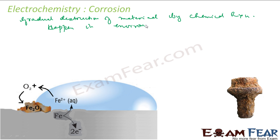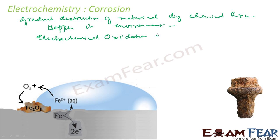This does not happen only in labs — it happens in the environment. It is electrochemical oxidation of metal. Rusting of iron, if you see, is one good example of corrosion.